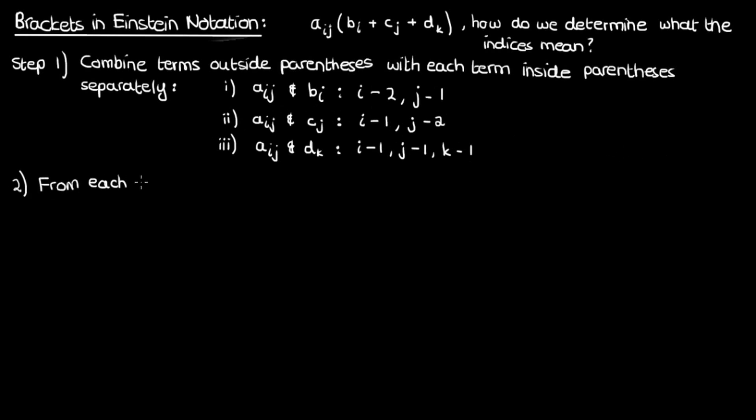Now, the second step is to combine the largest count of each index from the breakdown in step 1 and use that as the final index count for the purpose of determining whether an index is free or dummy. So in this example, the largest count of i occurs in the first combination, which is just 2.